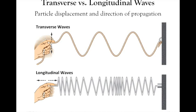Light waves have both a particle nature and a wave nature, but for our purposes we're just going to think about the wave nature. There are two types of waves: transverse and longitudinal. In a transverse wave, you can make one with a string tied to the wall — moving your hand up and down, a particle on that wave would move just up and down, with no horizontal or lateral component.